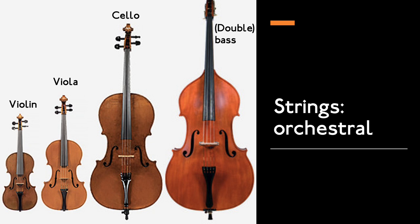Stringed instruments are easy to understand — they're the ones where the actual sound is produced by a string being plucked or played with a bow. Here are the orchestral stringed instruments: violin, viola, cello, and bass, ranging from the smallest to the largest. As with all instruments, the bigger the instrument, the lower the pitch of the sound.